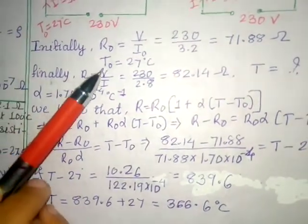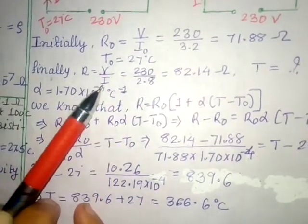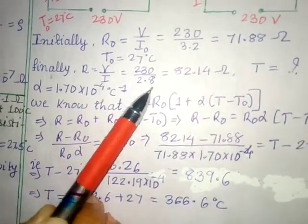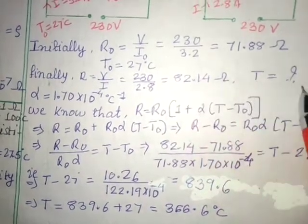Finally, R is equal to V by I. That means when the current is steady. So V is 230, it is the same, but current is steady, that is 2.8. So when you simplify you get 82.14 Ohm and T you have to find.